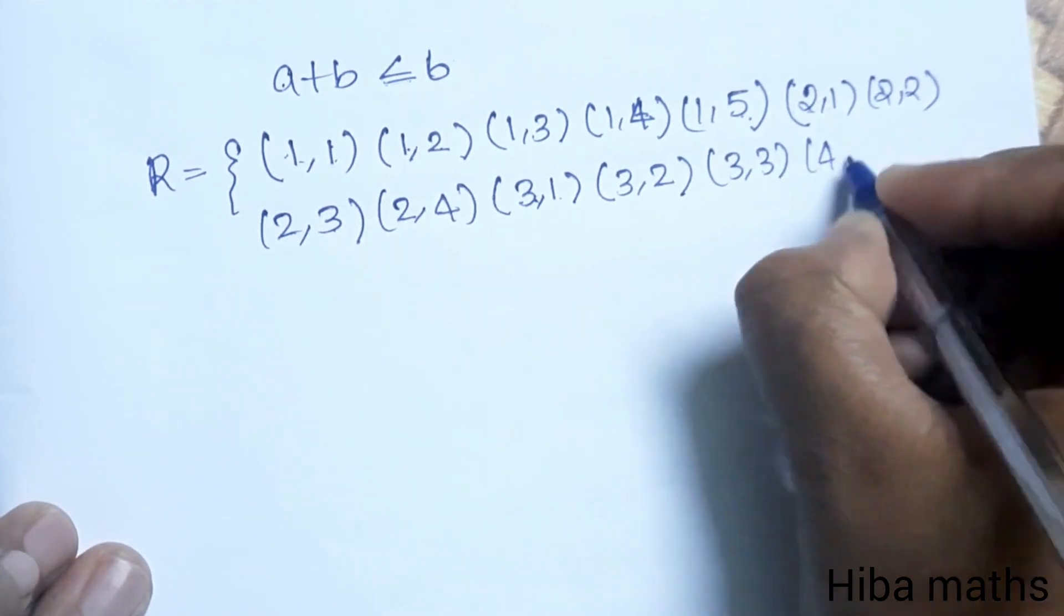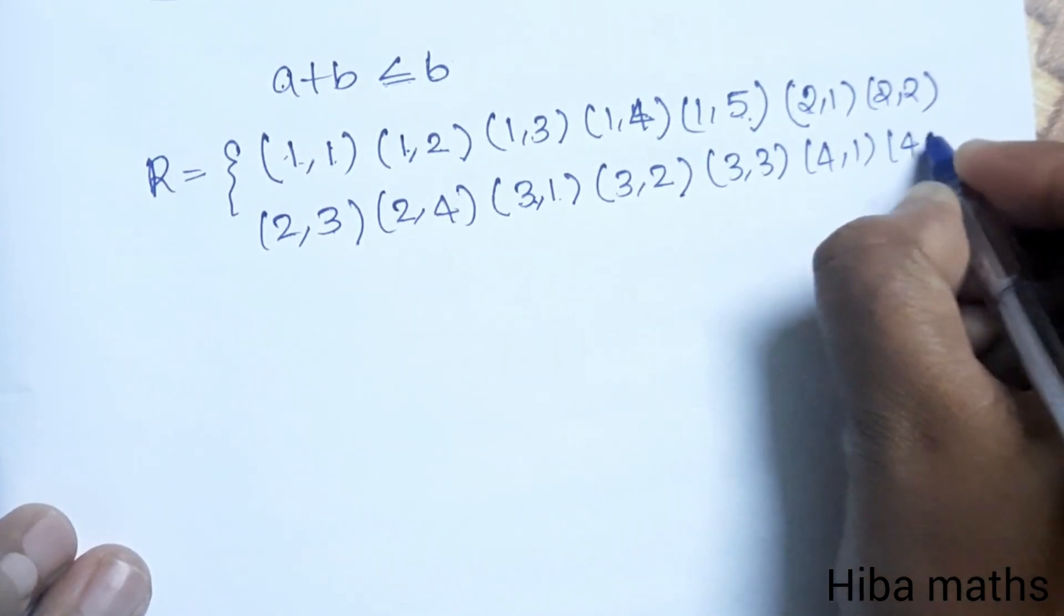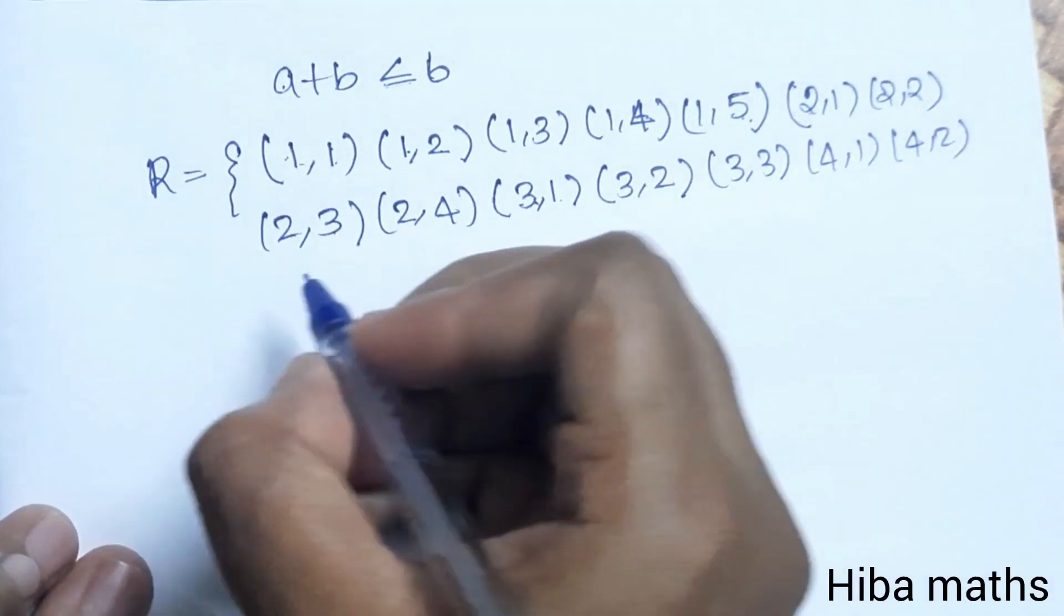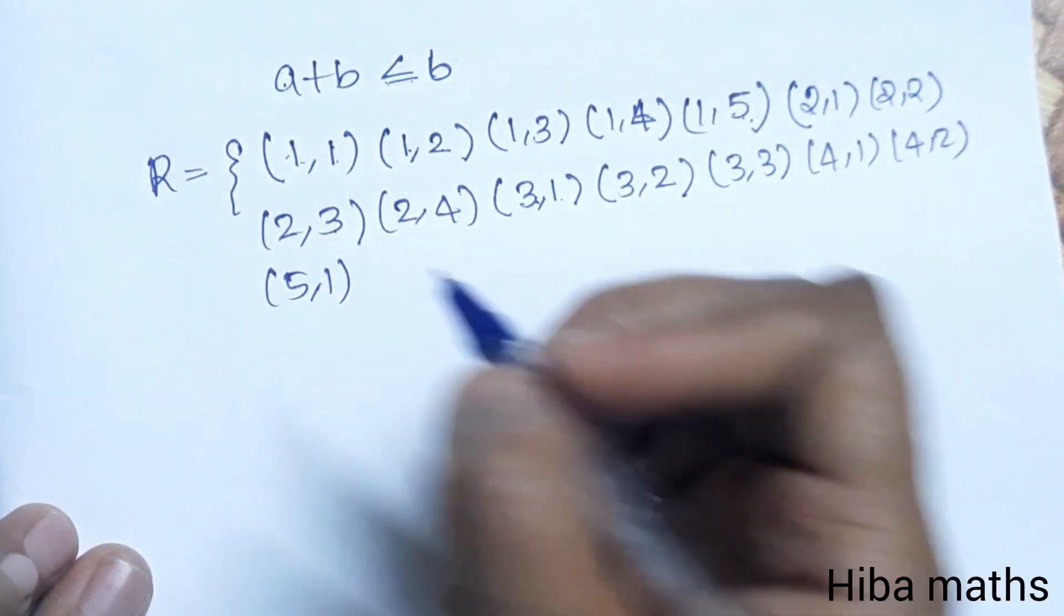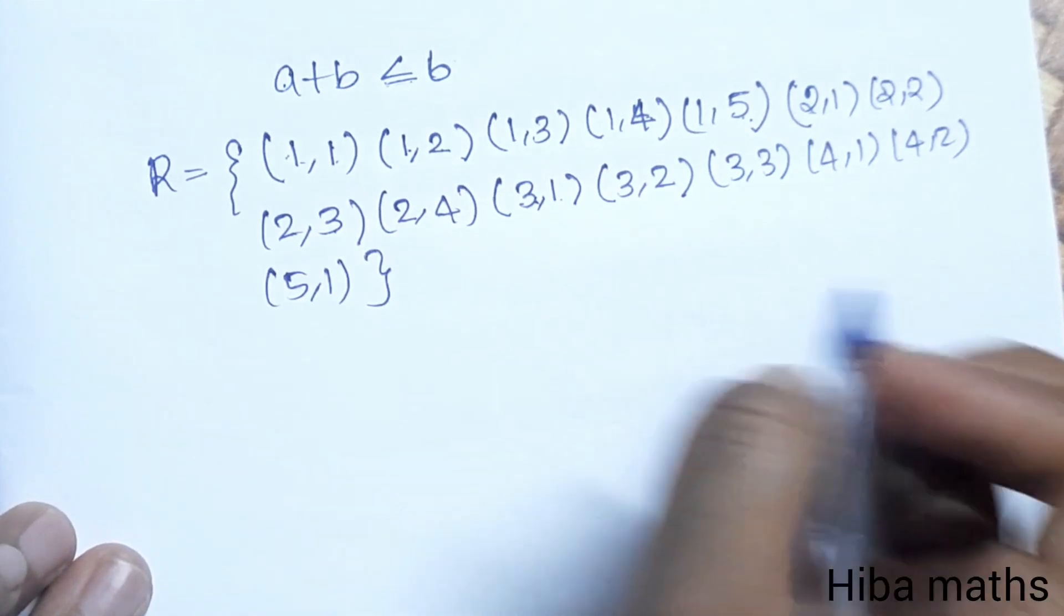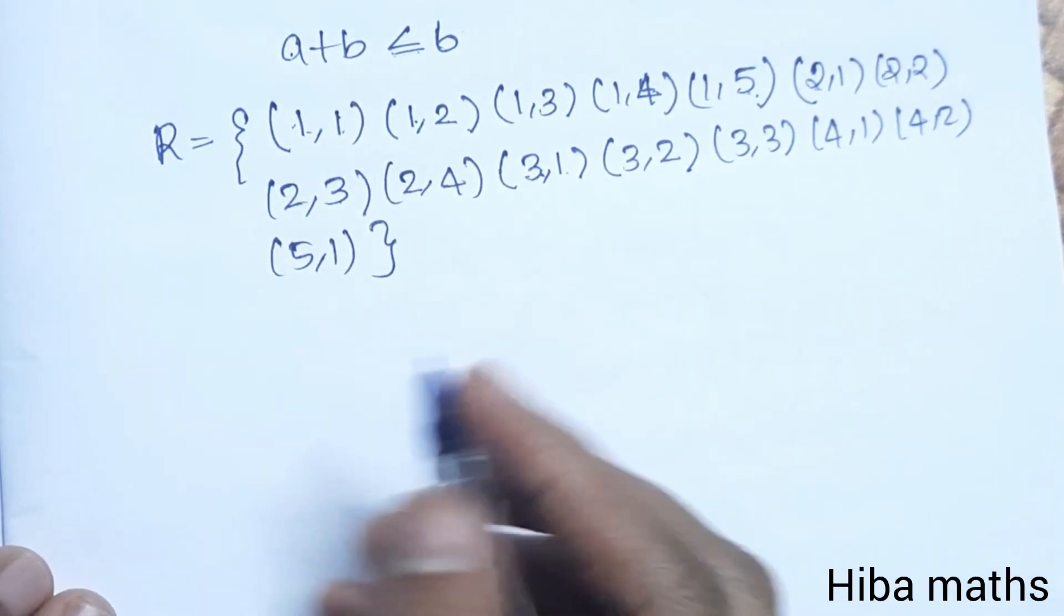(4,1) gives 5, (4,2) gives 6. (5,1) gives 6. So now we have all the ordered pairs that satisfy the relation, and we can check if this is reflexive.